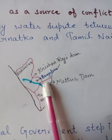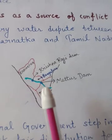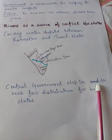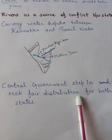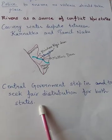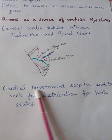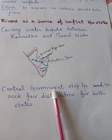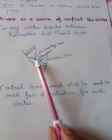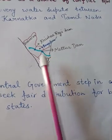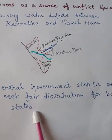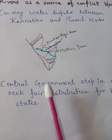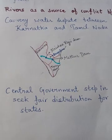The dispute was regarding sharing of water — Karnataka was utilizing more water than Tamil Nadu because its dam was located upstream and Tamil Nadu's was downstream. The central government stepped in to seek fair distribution for both states, and the conflict between the two states was ultimately resolved by the Supreme Court.